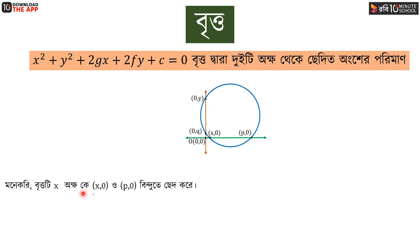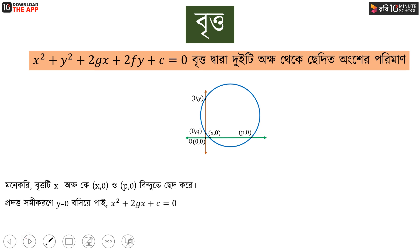We have to look at the intercepts: the points (x, 0) and (p, 0) on the axes. We also need to look at the case where y is equal to 0.